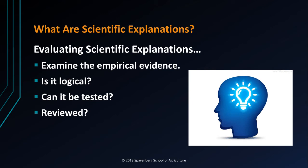We start by examining the empirical evidence. Were the observations accurately collected and recorded? Is the explanation logical? Does it contradict other explanations? Can it be tested? Can other people conduct the same test and get the same results? And finally, will it withstand the examination of other scientists? We call this the review process.